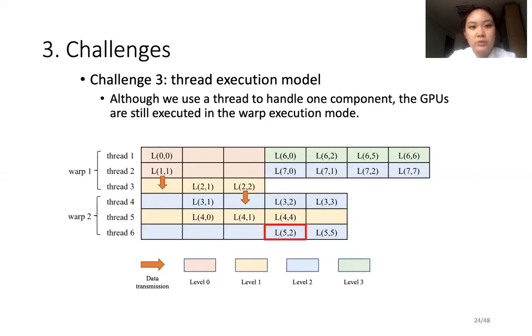The third challenge is thread execution model. Although we use a thread to handle one component, the GPUs are still executed in warp execution mode. In detail, the threads in the same warp have to transmit the required component simultaneously. For example, thread 6 requires X2 for computing element L52, which can be only obtained after the third cycle. However, if we simply use a while loop to check the condition to move on, thread 6 starts checking from the beginning and threads 4 and 5 within the same warp also need to wait for thread 6 in the constant condition check, which means that the processing of L31 and L40 also needs to be postponed to the fourth cycle, although the required X1 and X0 are ready at the second cycle.